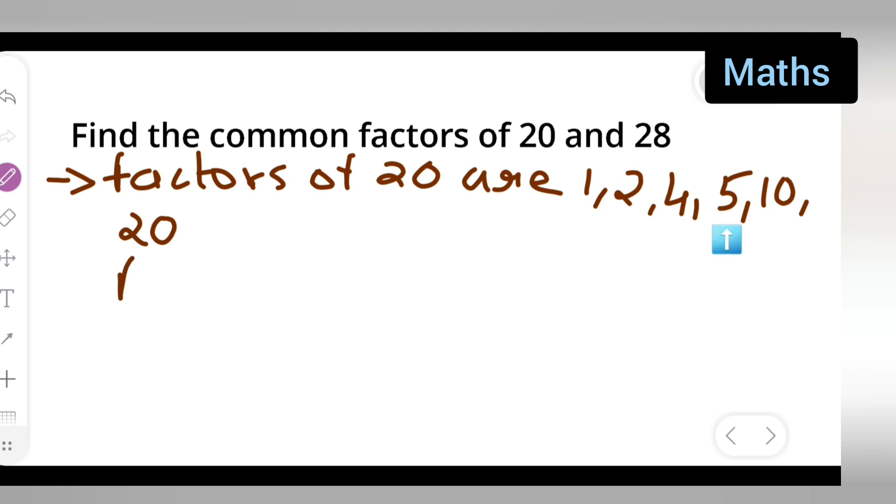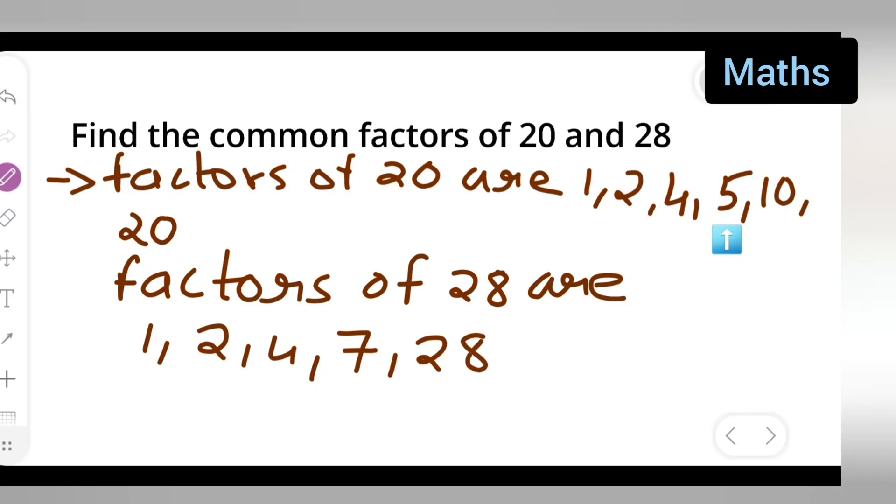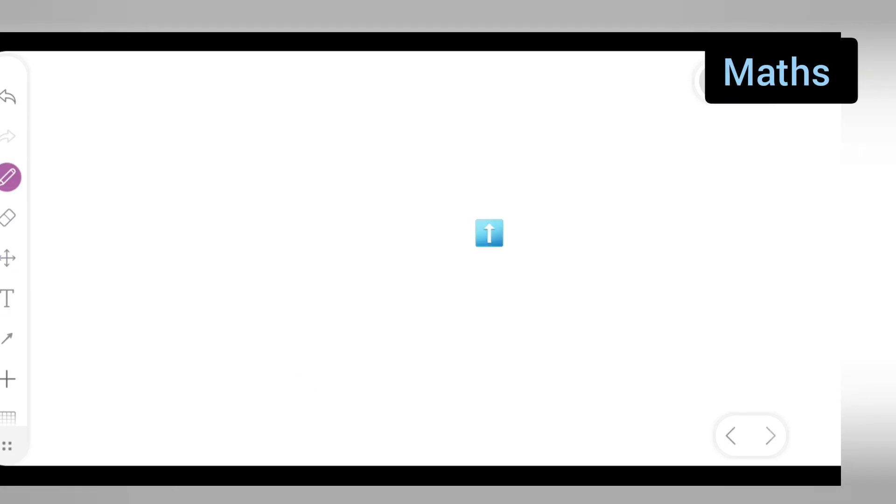Next, let's see factors of 28. Factors of 28 are 1 comma 2 comma 4 comma 7 comma 28. Now let us see the common factors.